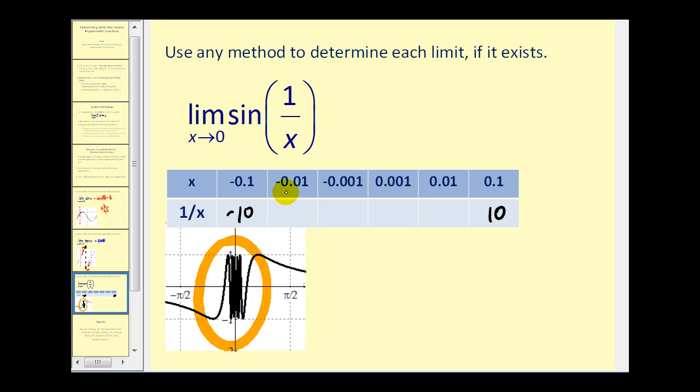When x equals negative 0.01 or negative one hundredth, 1/x would equal negative one hundred, and this would be positive one hundred. In these last two columns, as x gets even closer to zero and takes on the value of negative 0.001, which is negative one thousandths, 1/x would equal negative one thousand, and this would equal a thousand.